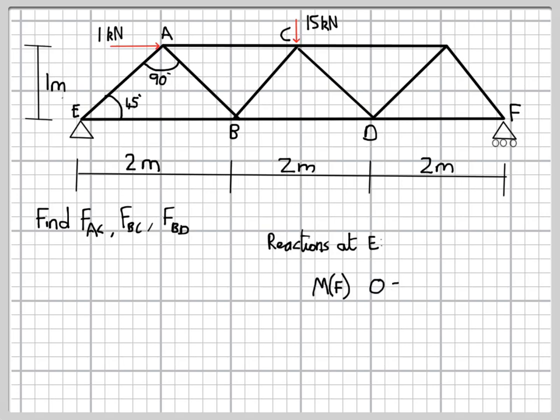So we'll proceed in a normal way. We'll take moments about F, and if we look at the moments about F, then there are three forces which have moments about F. There's the reaction force at E acting through 6 metres, the 1 kN force at A acting through 1 metre in the same direction.